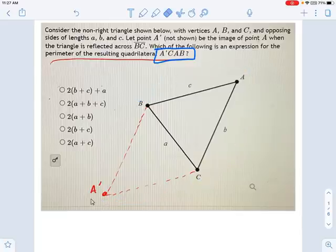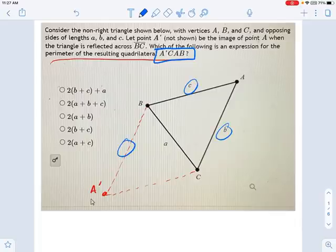Not too hard once you have a complete picture. Maybe that's what was holding you back. But it's simply going to be B plus C plus these two sides right here. Well, what are those? Remember, this thing's a perfect reflection, a mirror image. So these are going to be C and B. It just got flipped over this line of symmetry right here, BC.